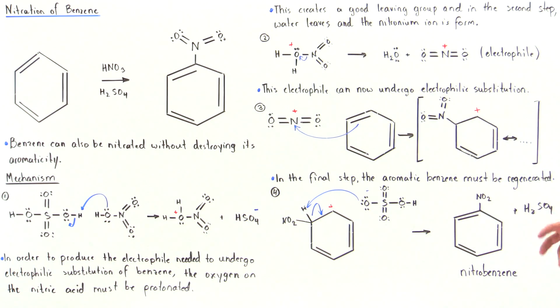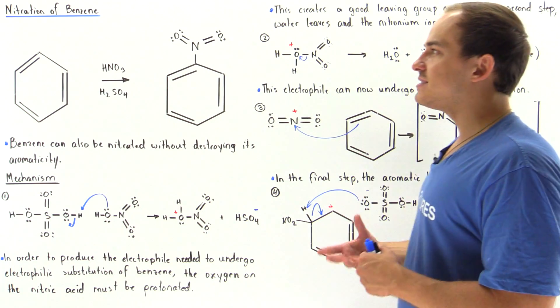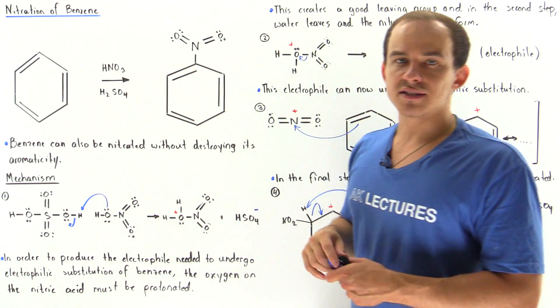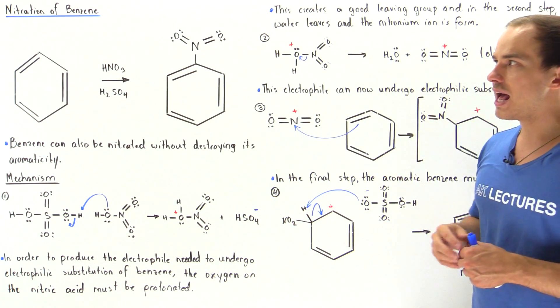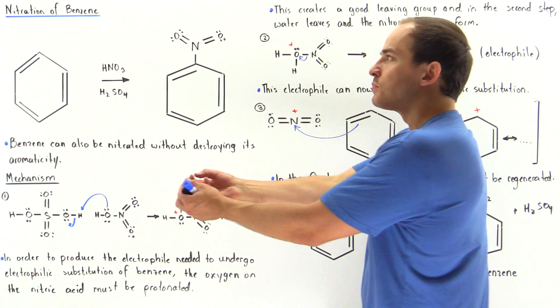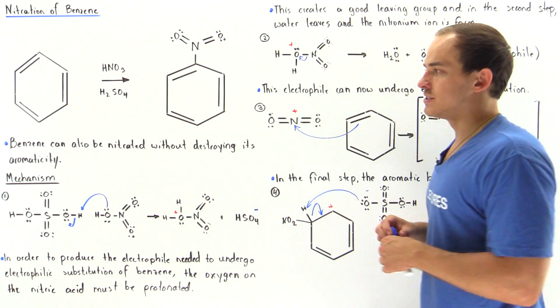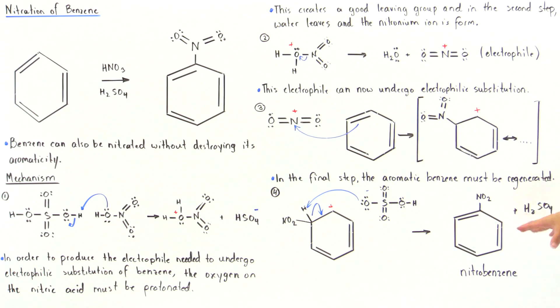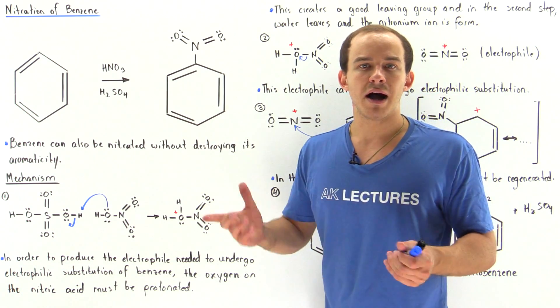So we see that in the nitration of benzene, if we use nitric acid in the presence of sulfuric acid and place benzene inside, we allow our nitration reaction to take place without breaking the aromatic character of this benzene molecule.